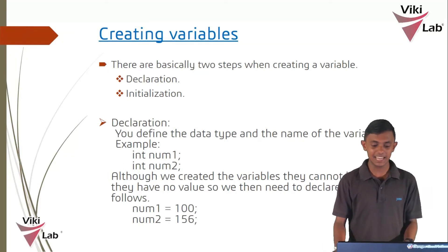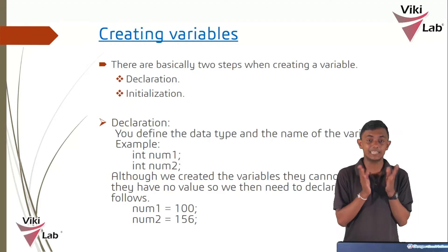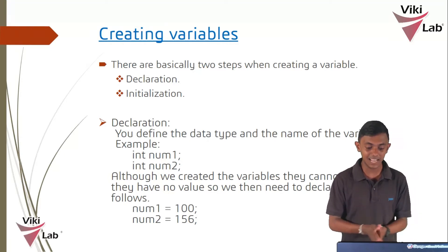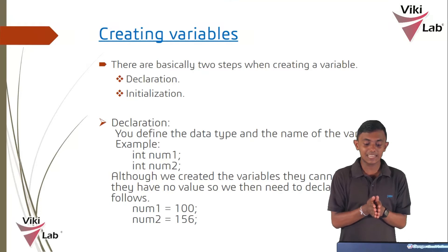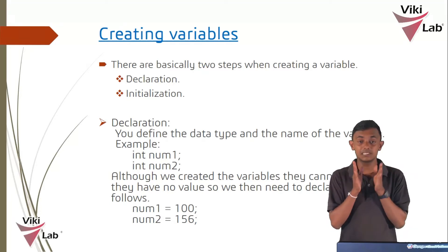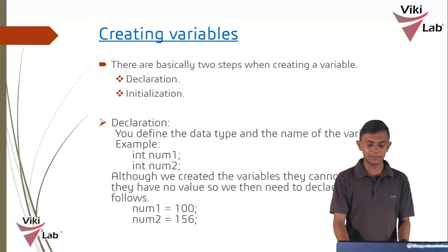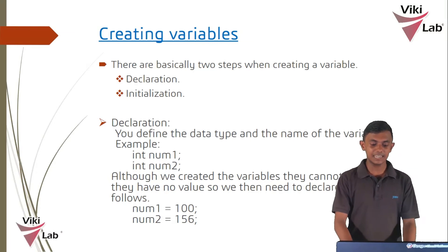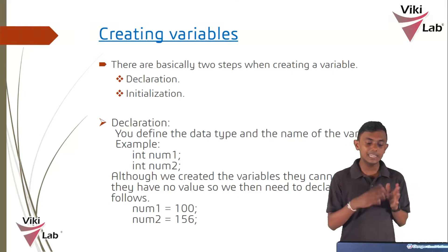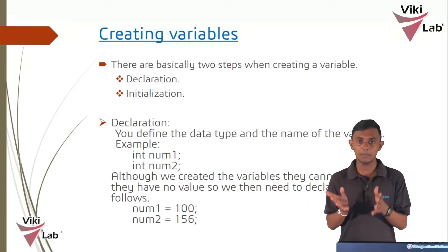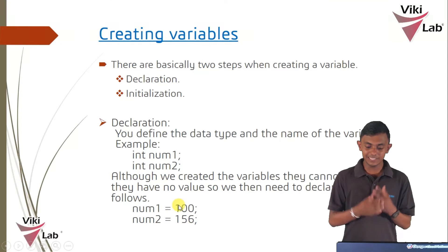The declaration is the name of the data type. The declaration is the name of the memory location. The declaration is the name of the int — for example, int name, int sum.